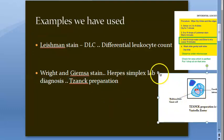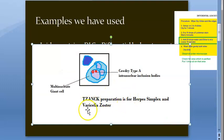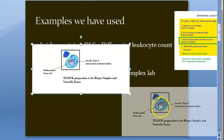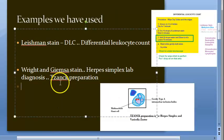For Tzanck preparation we were taught to use Wright and Giemsa stain, though in the lab I have not done it. In Tzanck preparation for herpes simplex and varicella zoster, you can see the multinuclear giant cell with intranuclear inclusion bodies — Cowdry type A inclusion bodies, also called Lipschütz bodies.